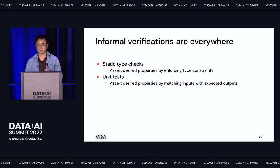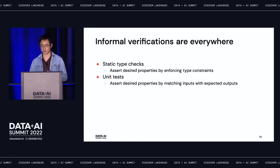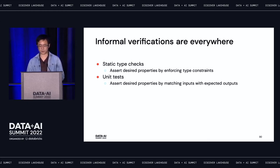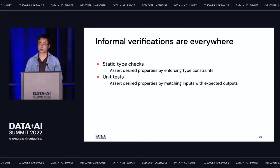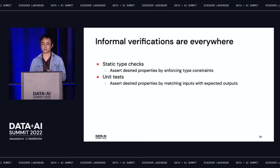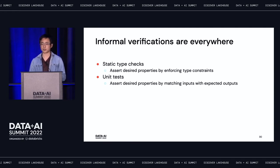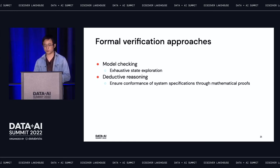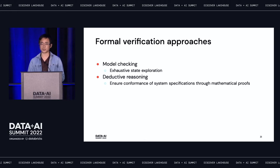Formal verification might sound daunting or purely academic, but we've actually been using some form of verification in our day-to-day practice. If you're using a statically type-checked language, you're using software to automatically assert properties by enforcing type constraints. If you're writing unit tests, you're asserting properties by ensuring input matches output. These are all forms of verification — but they're considered informal because they only test a subset of program behavior. Formal verification can exhaust all possible states and make sure the program is correct in all circumstances.